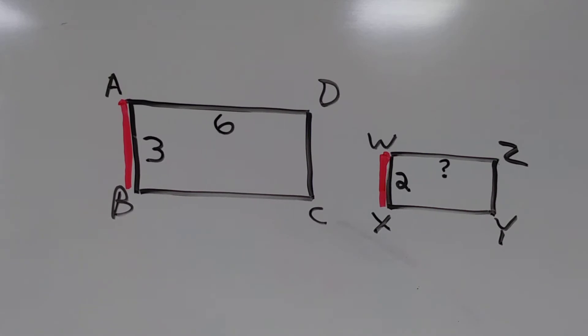First, it's important to understand which sides actually correspond to each other, which sides match. We know that AB is a short side of its rectangle, while WX is also a short side of its rectangle. We can also see that AD is a long side of its rectangle, while WZ is the corresponding long side of its rectangle.